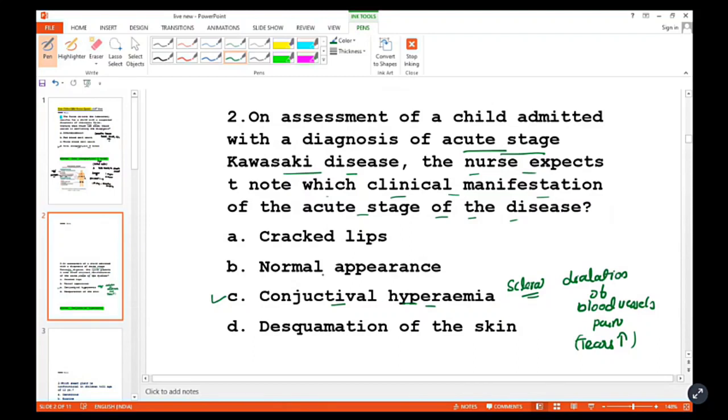Kawasaki disease, also called mucocutaneous lymph node syndrome, is a systemic inflammatory illness. The cause is unknown, but it may be associated with an infection from an organism or toxin.